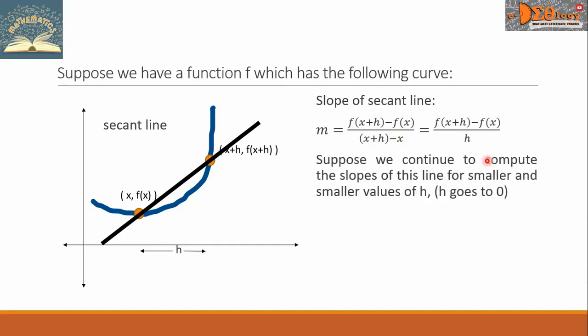Now, suppose we continue to compute the slopes of this line for smaller and smaller values of h. As we see that h goes to 0, the line will be changed and it will look like this. In this case, the two points now coincide. And the previous secant line, we will now call it as tangent line.